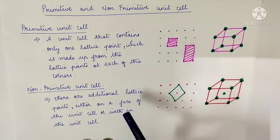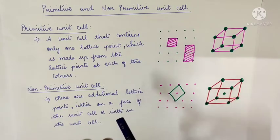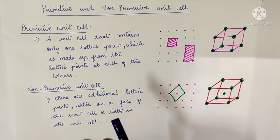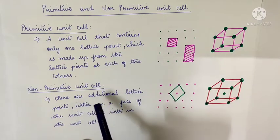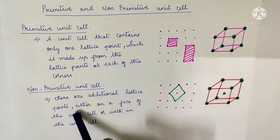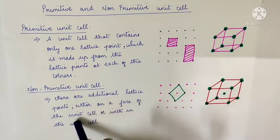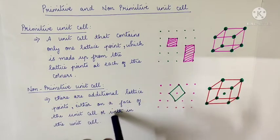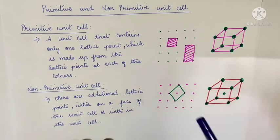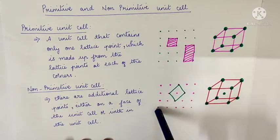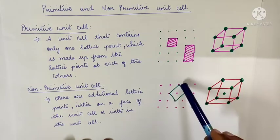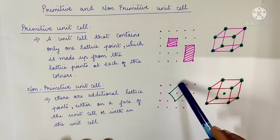Extra additional lattice points make a non-primitive unit cell. A non-primitive unit cell has additional lattice points either on the face of a unit cell or within the unit cell, at the lattice points.